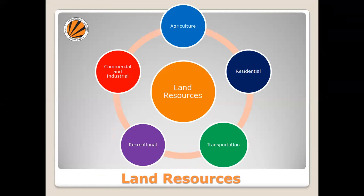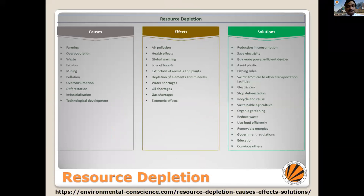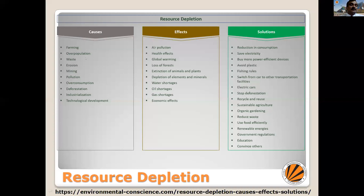When we talk about land resources, we use them for agriculture, residential purposes, transportation, recreational activities, and for commercial and industrial uses. But when we use these resources in excess, there is an issue of resource depletion. The causes include over-farming, overpopulation, waste, erosion, mining, pollution, overconsumption, deforestation, industrialization, and technological development — all of which are definitely needs of society, but they also create issues for nature.